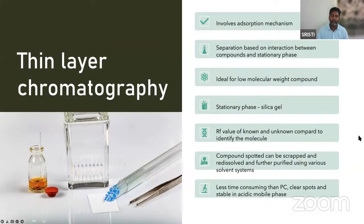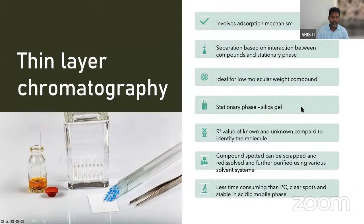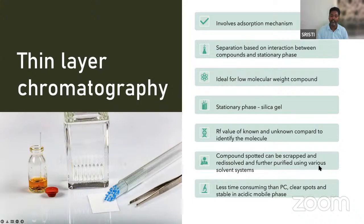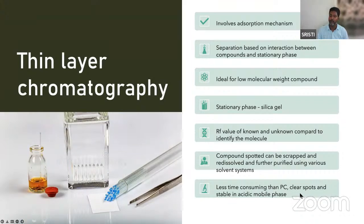The next method is thin layer chromatography (TLC). It also involves adsorption. Separation is based on the interaction between compounds and the stationary phase. It is ideal for low molecular weight compounds. The stationary phase is silica gel coated on glass or aluminum plates. The Rf value of known and unknown compounds are compared to identify molecules. The compound spot can be scraped and re-dissolved for further purification using various solvent systems. Less time-consuming than paper chromatography, gives clear spots, and is stable in most acidic mobile phases.